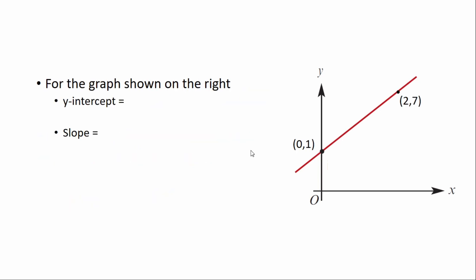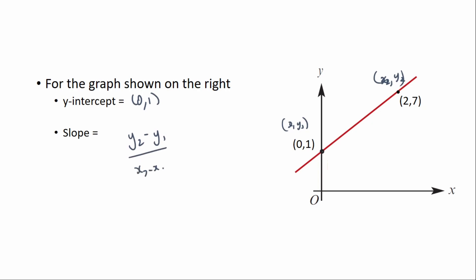Moving on to this graph, we're going to find the y-intercept and slope. The y-intercept crosses the y-axis right there, so the coordinates are (0, 1). For the slope, I'll label two points: (x1, y1) and (x2, y2). Remembering the formula for the gradient is rise over run, or (y2 − y1) / (x2 − x1). Here, y2 is 7, y1 is 1, x2 is 2, x1 is 0. So the gradient is (7 − 1) / 2 = 6/2 = 3.